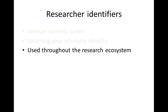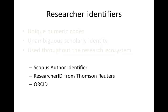Various identifiers exist for authors and scholars. These include Scopus Author Identifier, Researcher ID from Thomson Reuters, and ORCID. However, most of these work only at the level of a given national, proprietary, or disciplinary system.